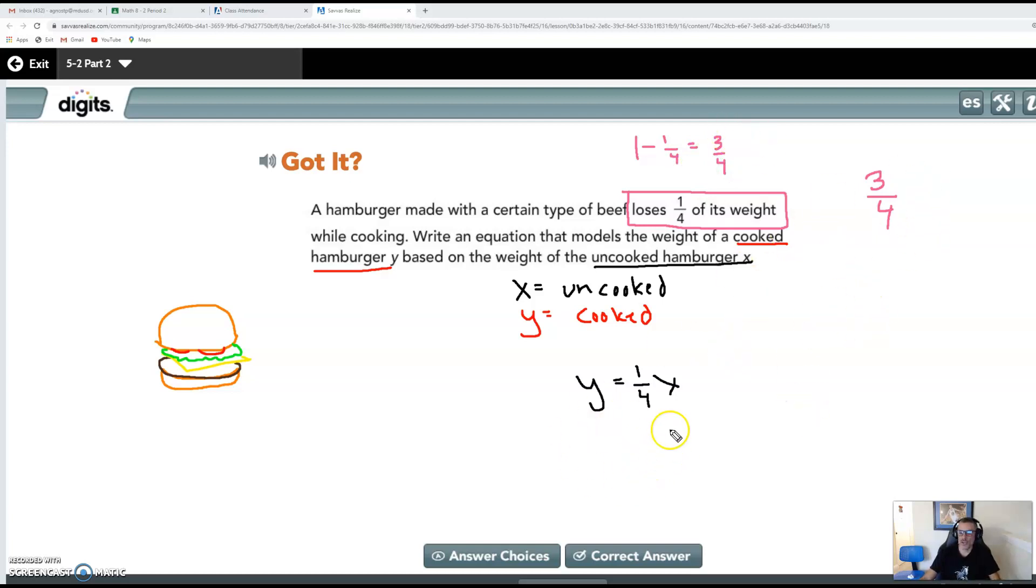So when I go to write an equation here, a cooked burger, y, this is my cooked burger, is always going to be equal to three fourths. It's always going to be equal to three fourths the size of the uncooked burger. So this is the uncooked. So if I take the uncooked burger, I multiply it by three fourths. That'll give me three fourths. That will equal the weight of the cooked burger.